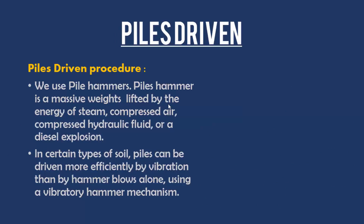For the pile driving procedure, we use a pile hammer — a massive weight lifted by steam, compressed air, hydraulic fluid, or a diesel explosion. We use this pile hammer to drive the pile into the soil. In certain types of soil, piles can be driven more efficiently by vibration than by hammer blows alone, using a vibratory hammer mechanism.